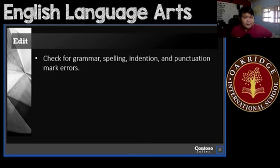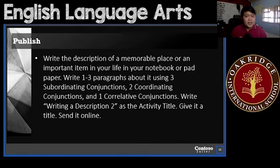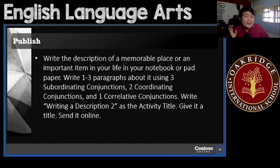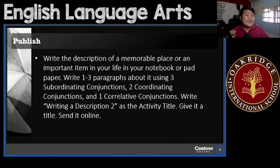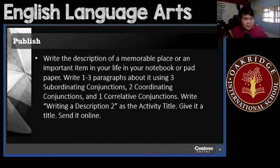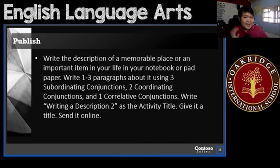When you're done with that, go to your edit. Check for grammar, spelling, indention, and punctuation mark errors — this is a very important step. Then, once you're done, go to your publish. Write the description of a memorable place, a memorable item, or anything that caught your attention — write it in your notebooks or pad papers. Write one to three paragraphs using three subordinating conjunctions, two coordinating conjunctions, and one correlative conjunction. Title it 'Writing a Description 2' and send it online.